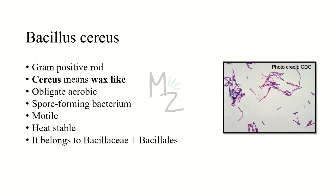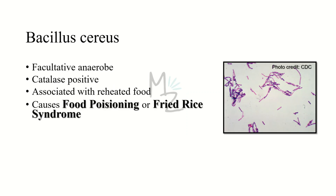Bacillus cereus belongs to the family Bacillaceae, specifically Bacillales, which includes gram positive rods. As seen in the picture, you can observe the gram positive rods with square ends. It is a facultative anaerobe and catalase positive. It is associated with reheated food and is responsible for causing food poisoning, famously known as fried rice syndrome, but it can also cause certain other diseases.